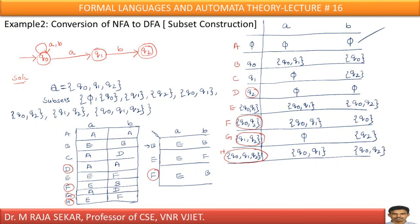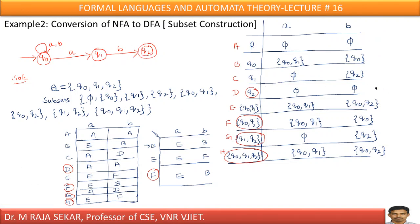Q0 on A: you get Q0. Q0 on B: you get Q0Q1. Q1 on A: there is no transition, therefore empty set. Q1 on B: you get Q2. For composite states: Q0Q1 on A means delta of Q0 on A union delta of Q1 on A — union of Q0 and empty — giving Q0. Q0Q1 on B means delta of Q0 on B union delta of Q1 on B — Q0Q1 union Q2 — giving Q0Q1Q2. Just formulate this table in this manner.